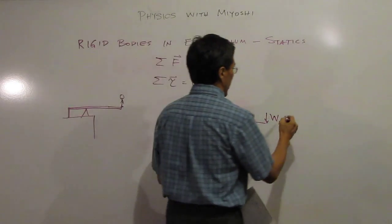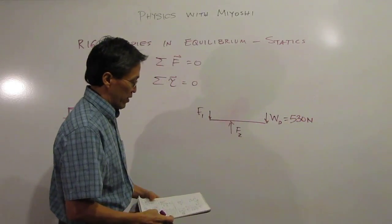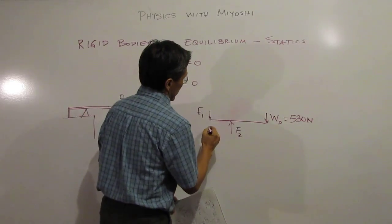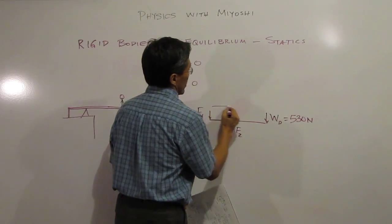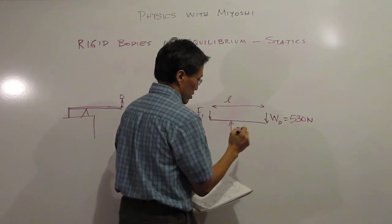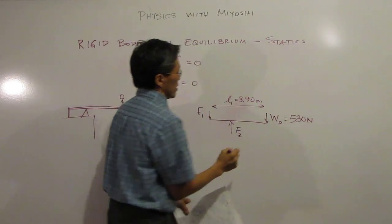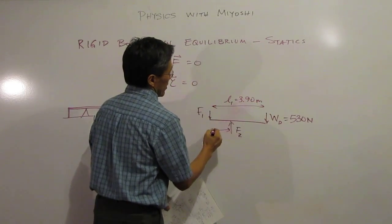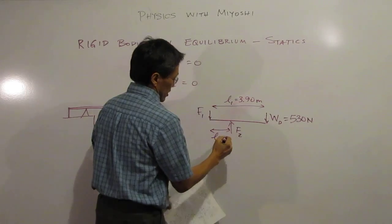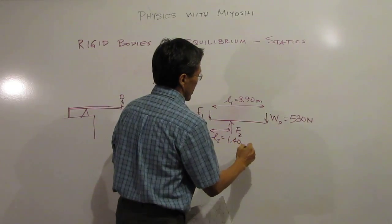And the example I've got, let's call this 530 Newtons. And we're going to try to figure out, and we know the distance here, between here and here. I'll call that L1 is 3.90 meters. And I'll call this guy here L2, and that is 1.4 meters.